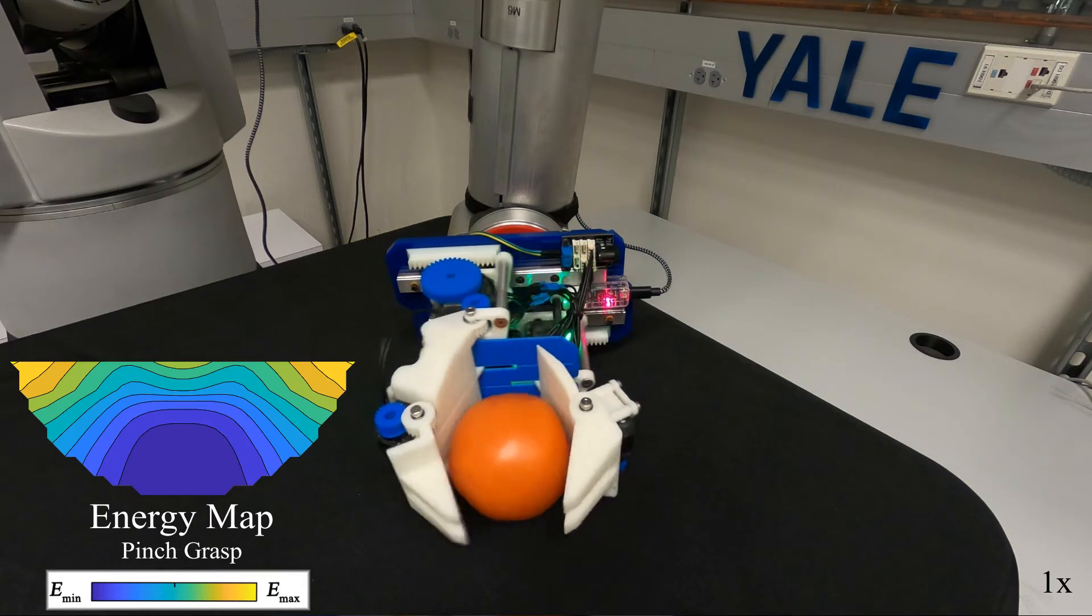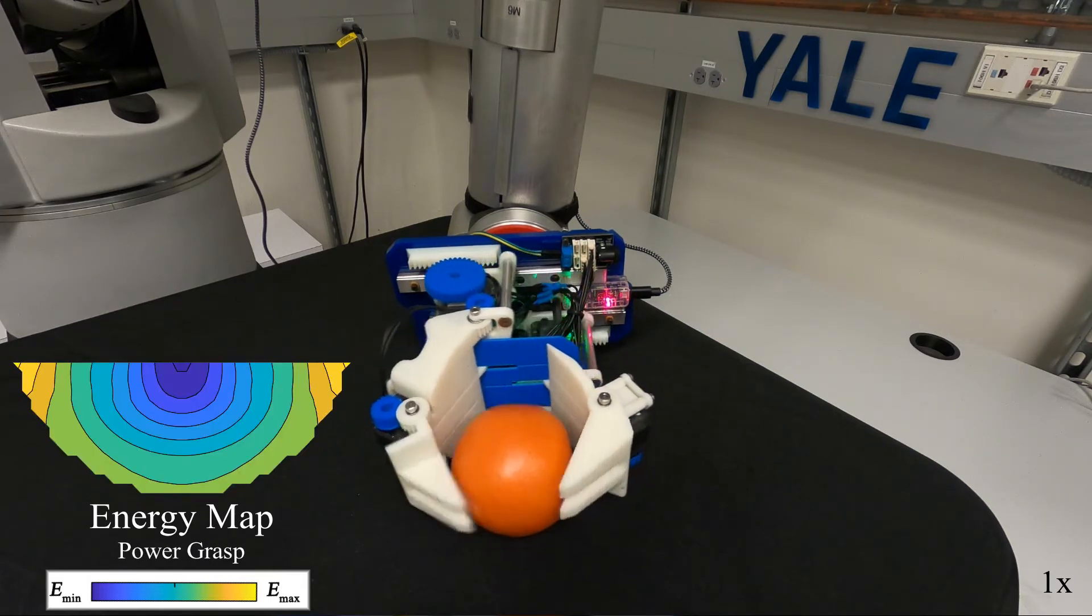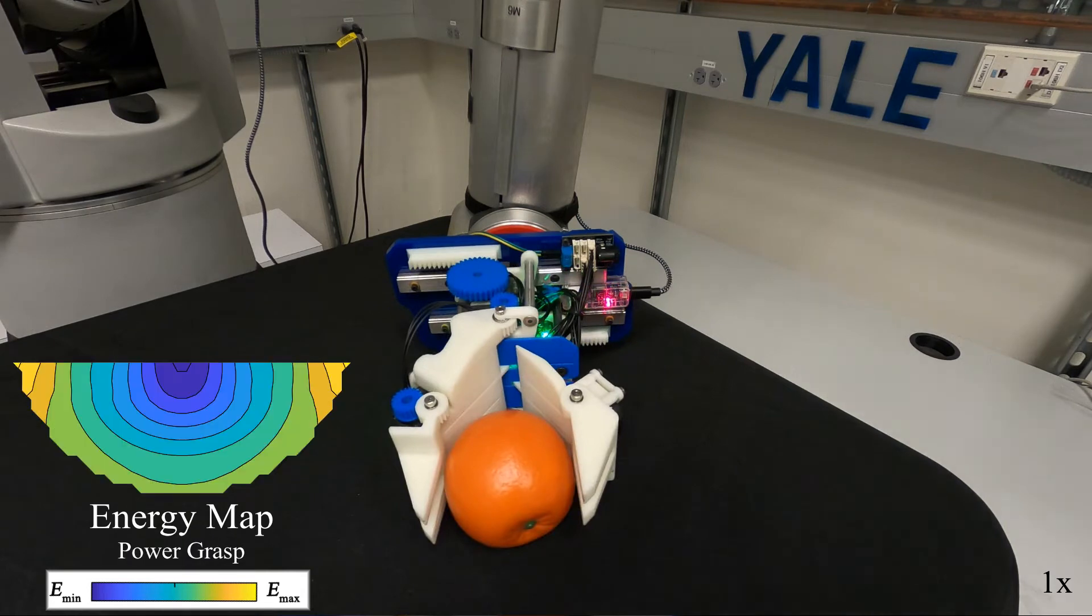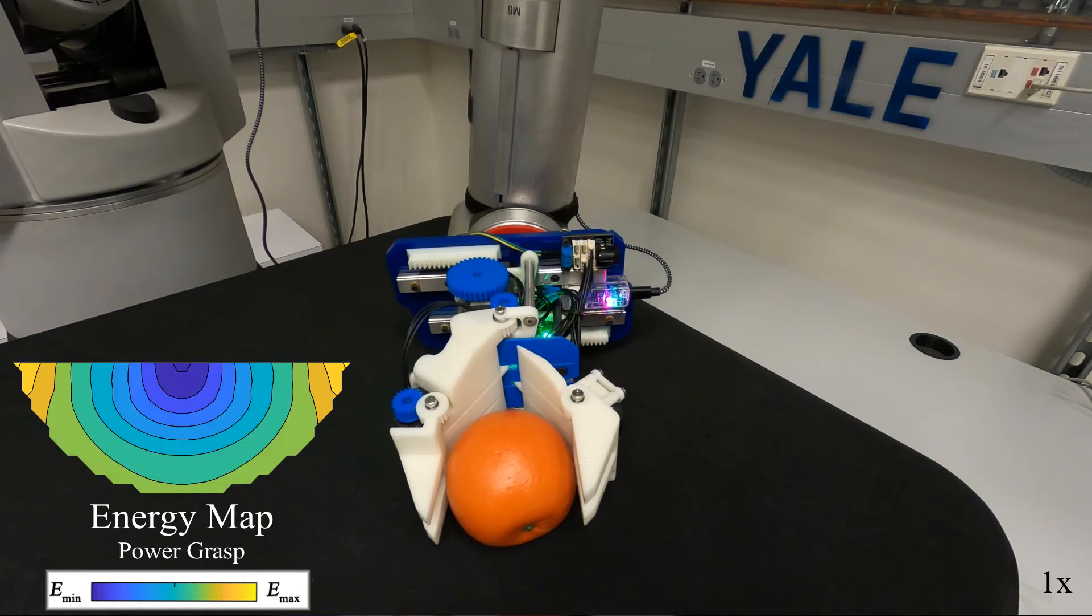This next clip shows an orange being manipulated back and forth between power and pinch grasps. Transferring from power to pinch is challenging, as it requires the hand to push the object away from the palm, but this is possible thanks to the variable palm width of the hand.